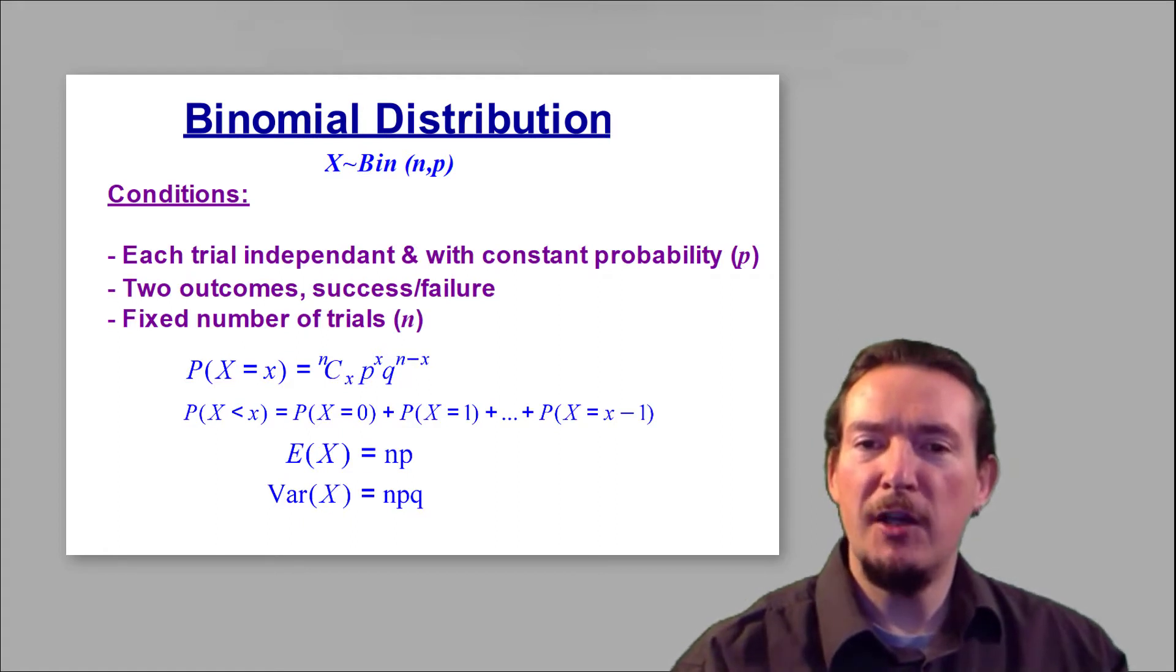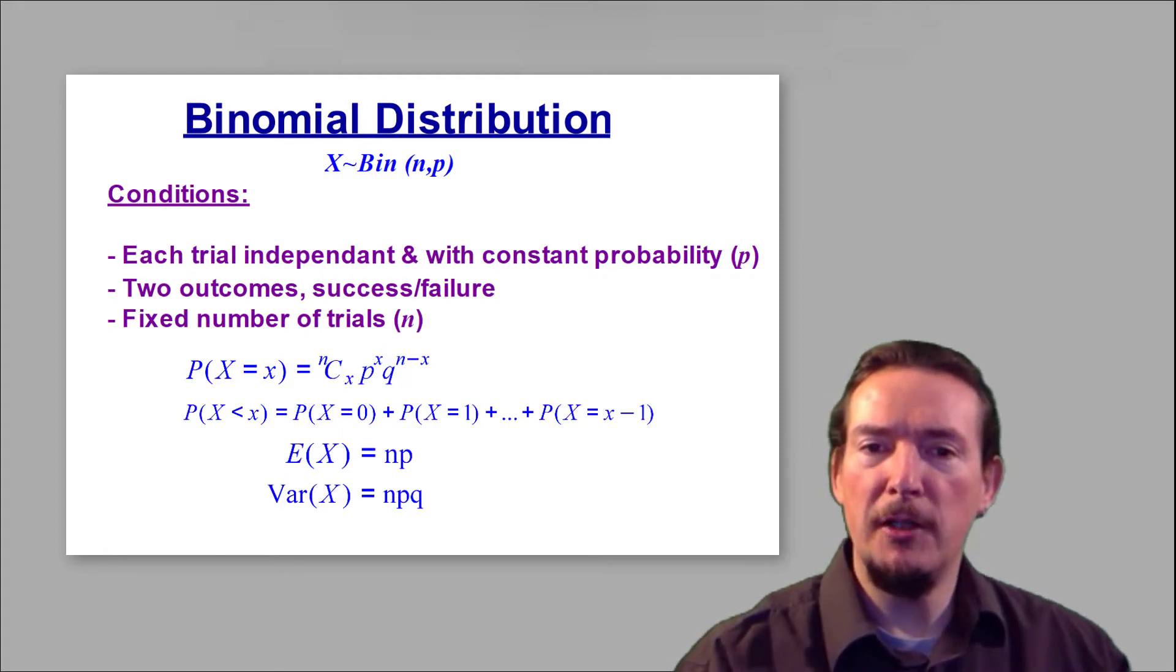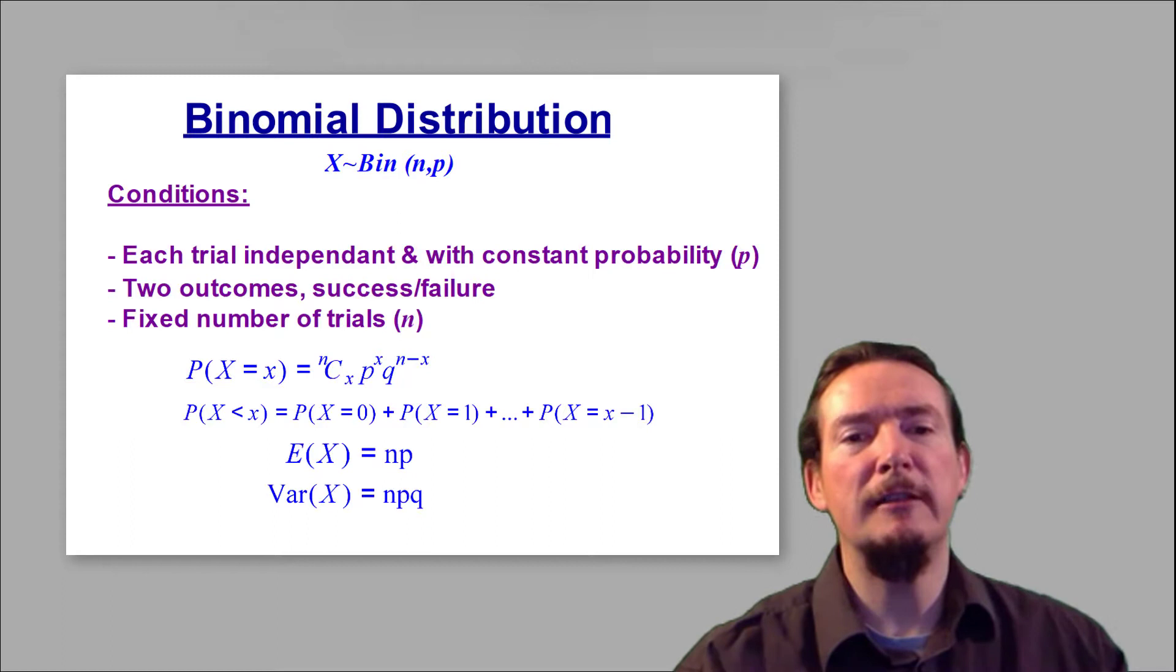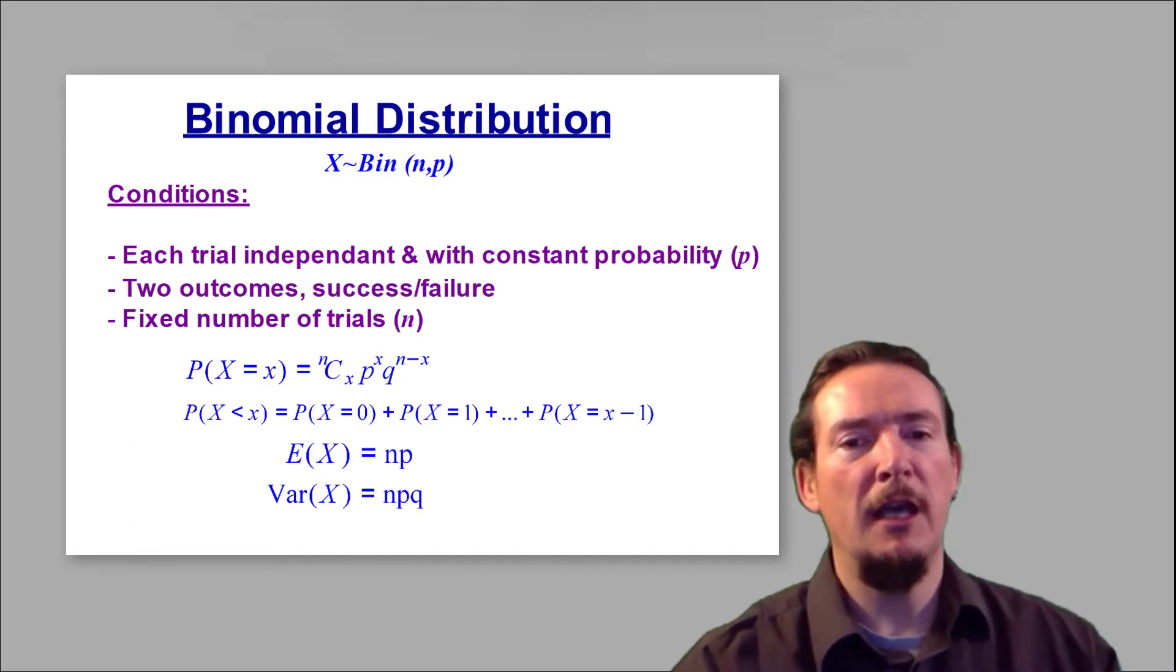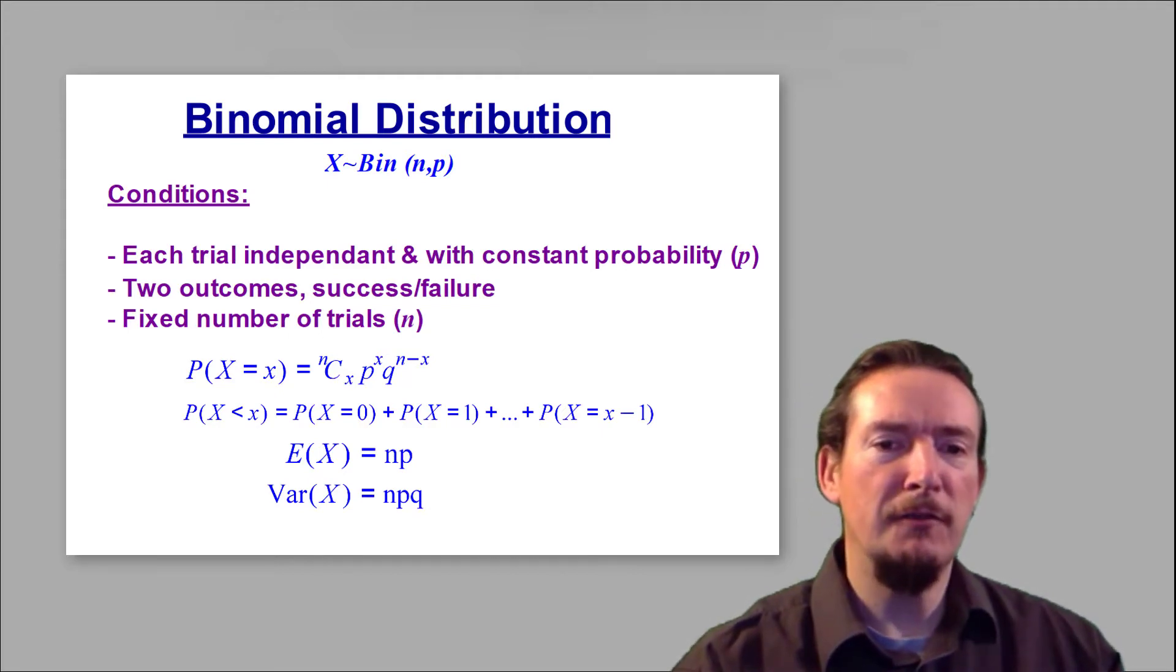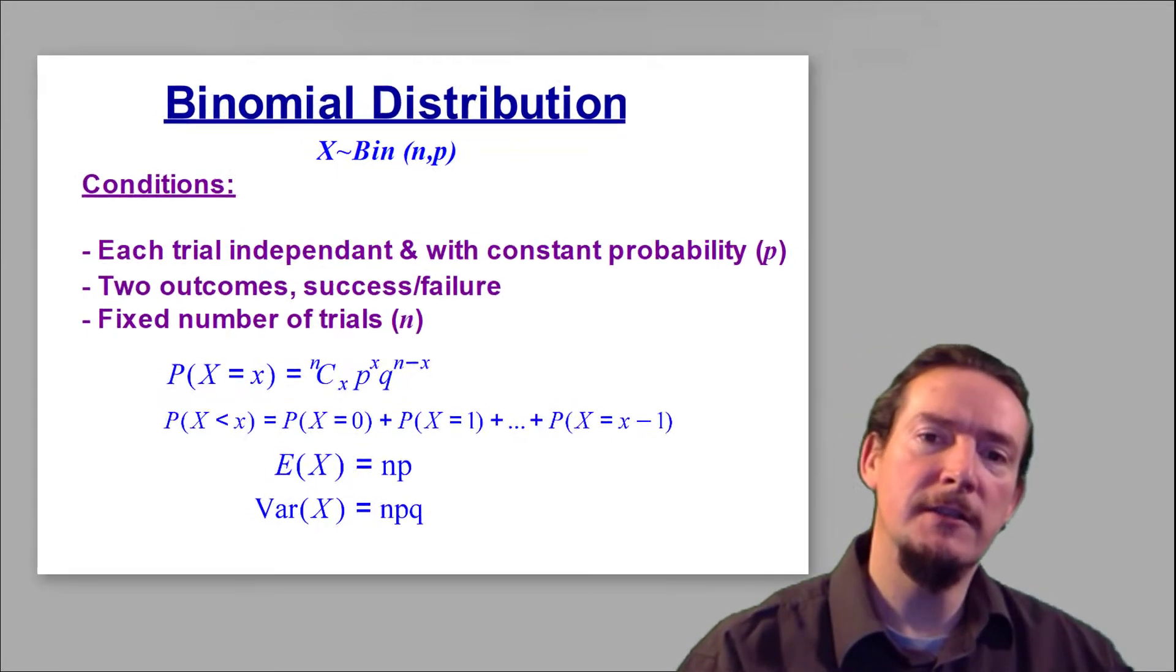If you are asked to justify why a problem can be modelled as a binomial distribution, it is important to rewrite these conditions with a clear reference to the context of the problem and not just rattle them off, or you run the risk of not being given full credit for your answers.